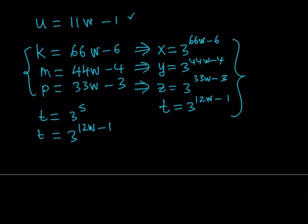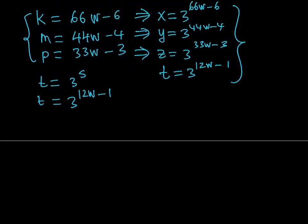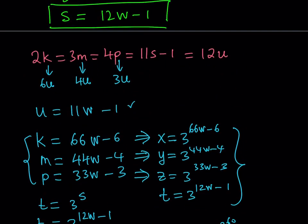This basically gives us the solution as ordered quadruples, and by changing the values of w, using positive integer values, you can get infinitely many solutions to this equation. For example, if w is equal to 1, then you're going to be getting x is equal to 3 to the power 60, y is equal to 3 to the power 40, z is equal to 3 to the power 30, and t is equal to 3 to the power 11. And obviously, you can find much more, but basically, this proves that there are infinitely many solutions to this equation in natural numbers.